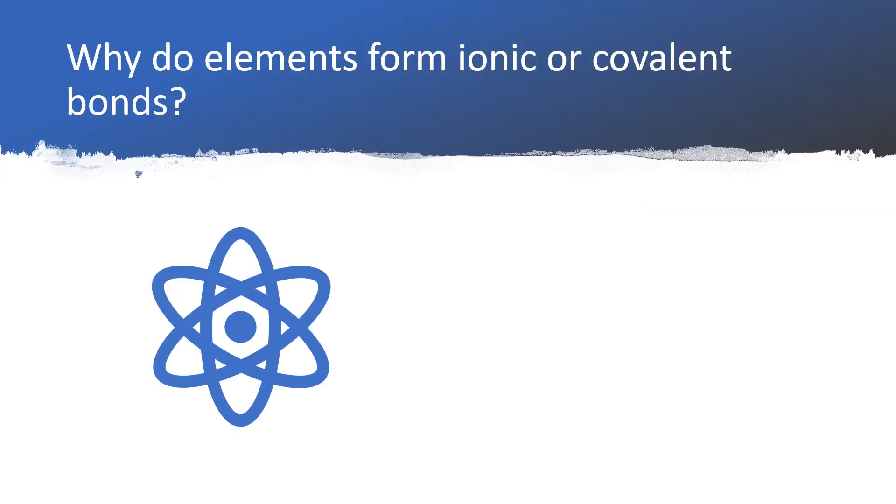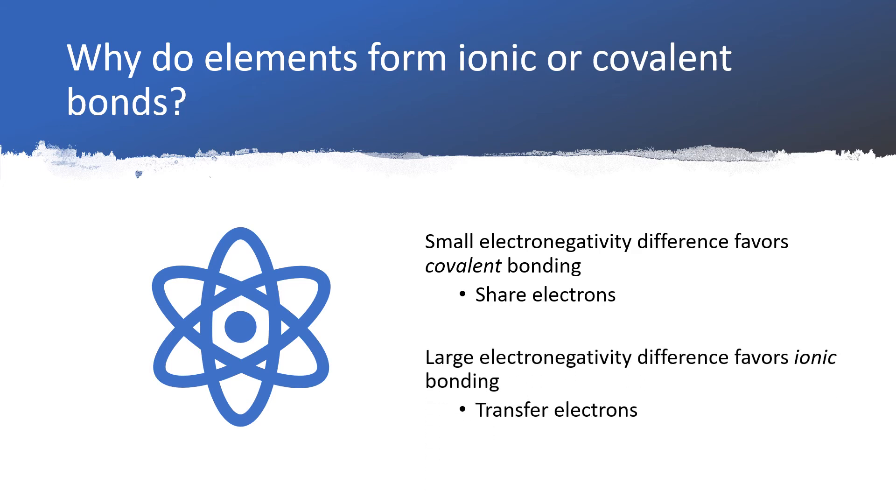We can address the question of why elements form an ionic or covalent bond with electronegativity. The idea here is that if you have a small difference in electronegativity between the two atoms that are bonding, it's going to favor covalent bonding because both atoms are pulling on the shared pair of electrons equally, so they end up sharing those electrons. If we have a big difference in electronegativity, it will favor ionic bonding as the more electronegative element yanks away the electron from the less electronegative element. We'll have this transfer of electrons and will end up with substances that have charges or ions.